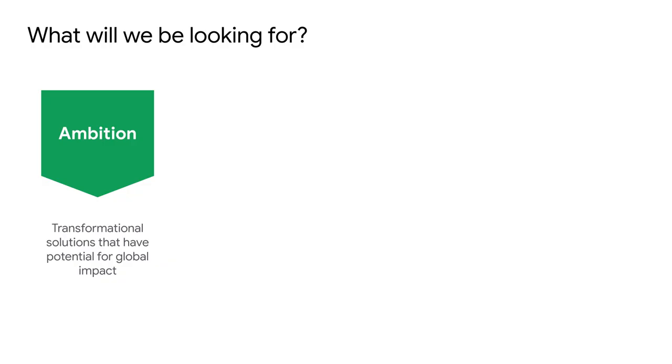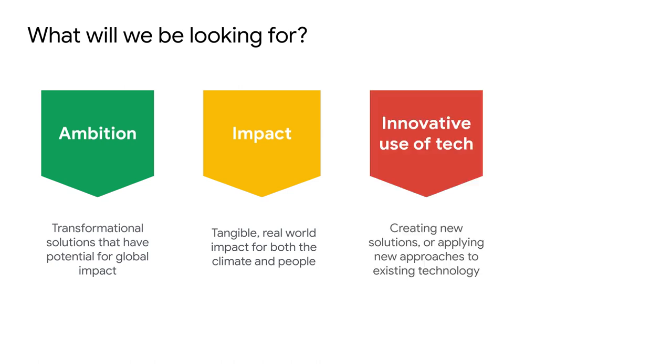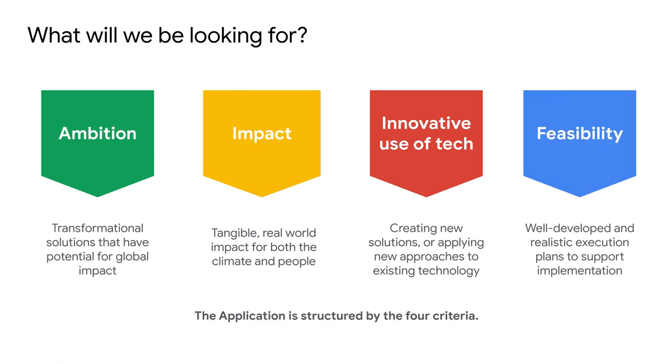We have four major criteria for this challenge: ambition, impact, innovative use of technology, and feasibility. We've structured our application questions by these four criteria, so you will always know what we're evaluating in each section. Within each criteria, we're looking for transformational solutions that have potential for global impact, tangible real-world impact for both the climate and people, creating new solutions or applying new approaches to existing technology, and well-developed and realistic execution plans to support implementation.